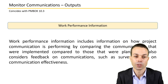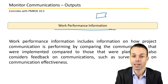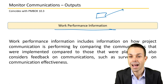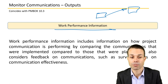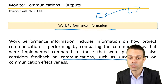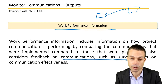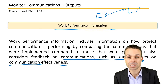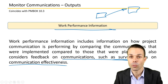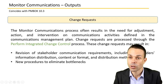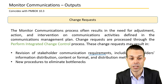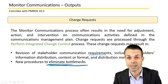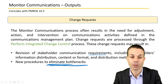Outputs for monitoring communications include work performance information, comparing what we had planned for communications versus what is actually happening — often expressed as a ratio or percentage — considering feedback such as survey results on communication effectiveness. Change requests may also arise, revising stakeholder communication requirements including information distribution, content, format, or distribution method, and new procedures to eliminate bottlenecks in communication, which might also impact the schedule, cost, or scope baselines.